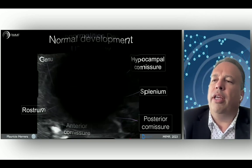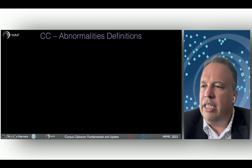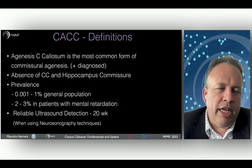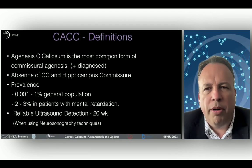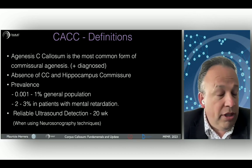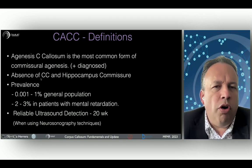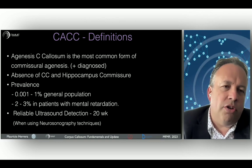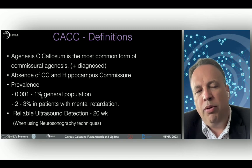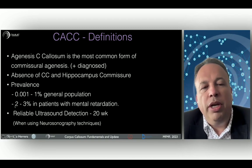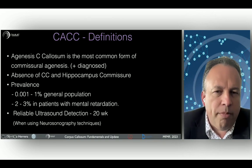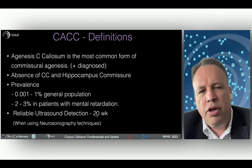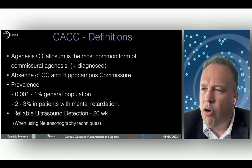We are going to discuss complete agenesis of the corpus callosum. Agenesis of the corpus callosum is the most common form of commissural agenesis, and the absence of the corpus callosum is associated with possible absence of other commissures, most frequently the hippocampal and the anterior commissure. The prevalence is less than 1% in the general population, and between 2% to 3% of cases are found in patients with mental retardation.